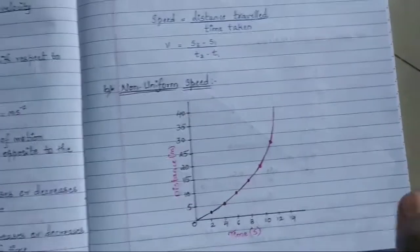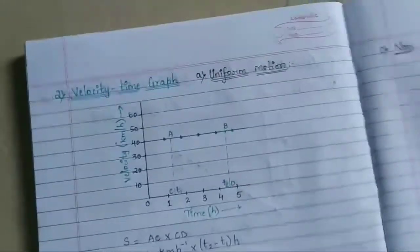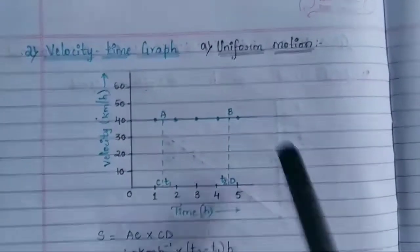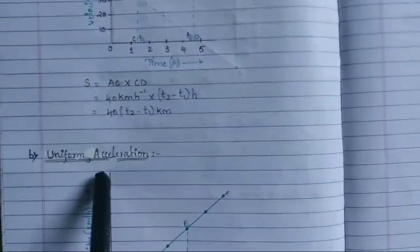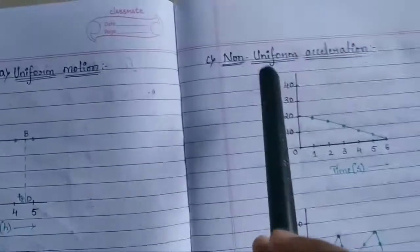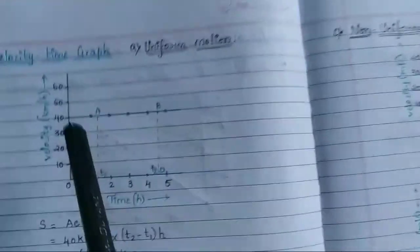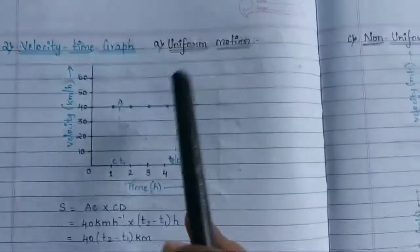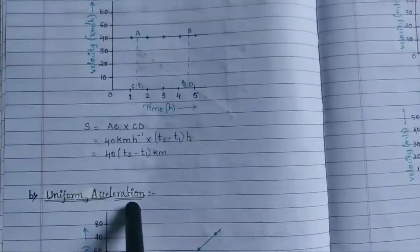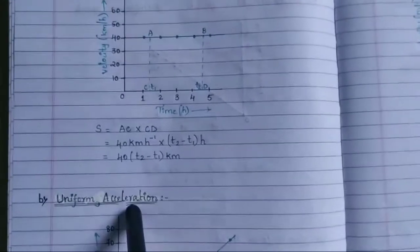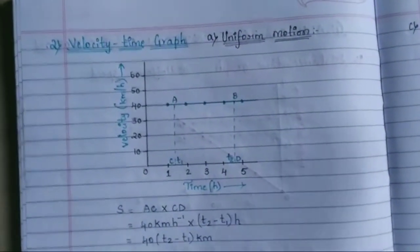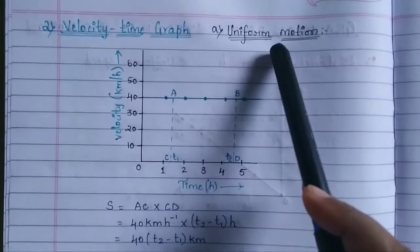Next, we look at another type of graph: the velocity-time graph. In the velocity-time graph you have three types: uniform motion, uniform acceleration, and non-uniform acceleration. You know that if velocity is changing, there will be acceleration.